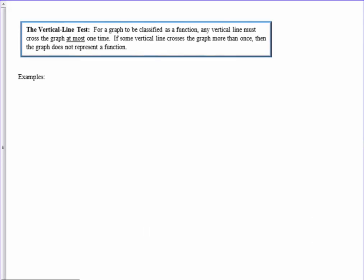The examples that I will give you here have to do with what we call the vertical line test. For a graph to be classified as a function, any vertical line must cross the graph at most one time. If some vertical line crosses the graph more than once, then the graph does not represent a function.